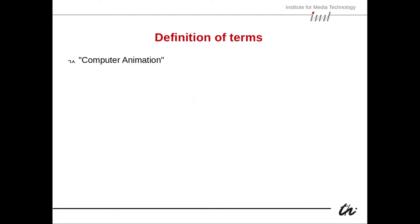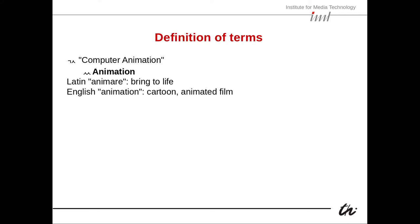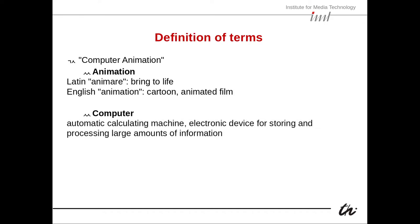That leads me to the definition of terms. Computer animation comes from the Latin 'animare', meaning bringing to life. In English, an animation is a cartoon or animated film. And computer, of course, is an automatic calculation machine — an electronic device for storing and processing large amounts of information.